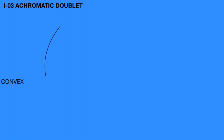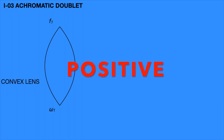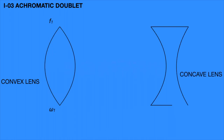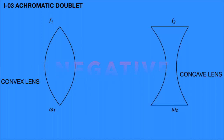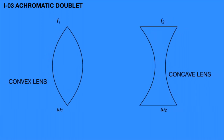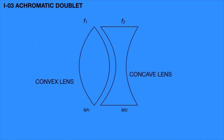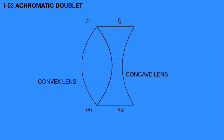In this system, imagine a convex lens having focal length f1 and dispersive power omega 1. The chromatic aberration for a convex lens is always positive. Now consider a concave lens having focal length f2 and dispersive power omega 2. We know that chromatic aberration for a concave lens is always negative.